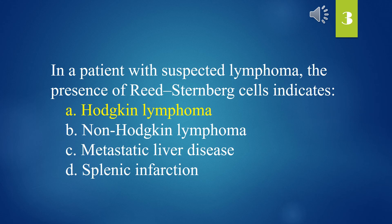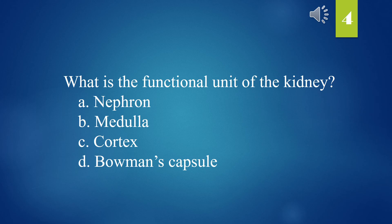What is the functional unit of the kidney? A. Nephron. B. Medulla. C. Cortex. D. Bowman's capsule. The answer is A. Nephron.